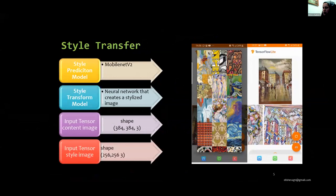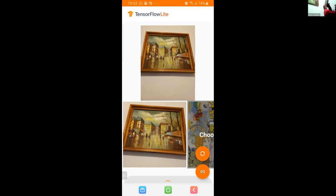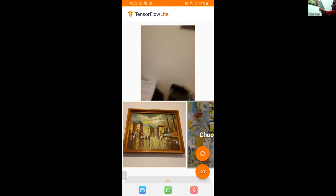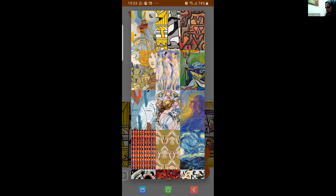This artistic style transfer model consists of two sub-models. The style prediction model, MobileNet version 2 based neural network, takes an input style image to a 100-dimensional style bottleneck vector. And the second one is a style transfer model, a neural network that takes an input style bottleneck vector to a content image and creates a stylized image. We will choose the style. The result is this one.